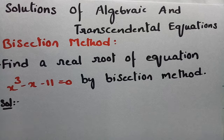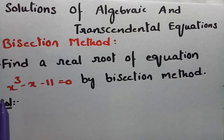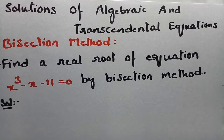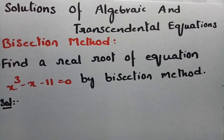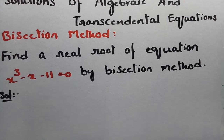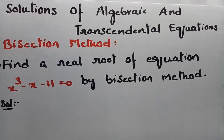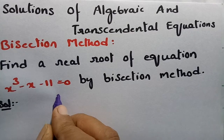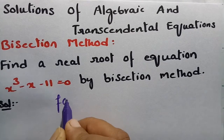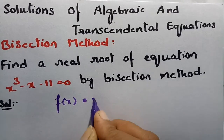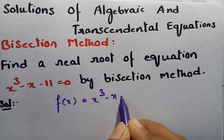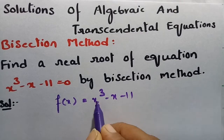We have to find the real root of the equation x cubed minus x minus 11 equals 0 using the bisection method. So f of x is equal to x cubed minus x minus 11.